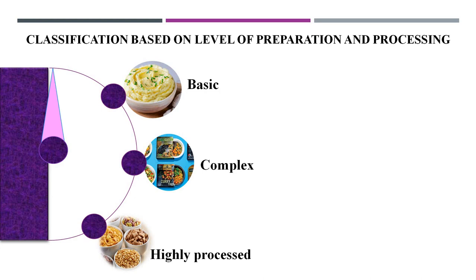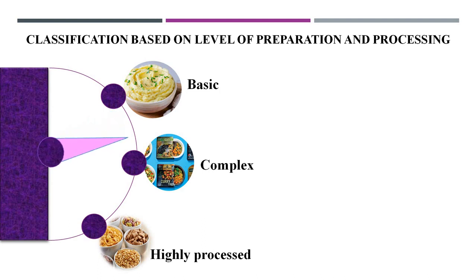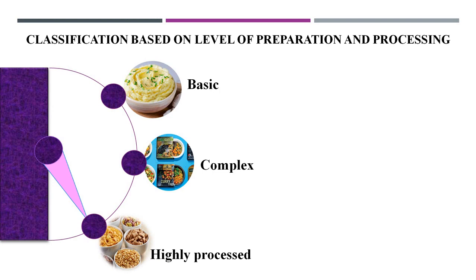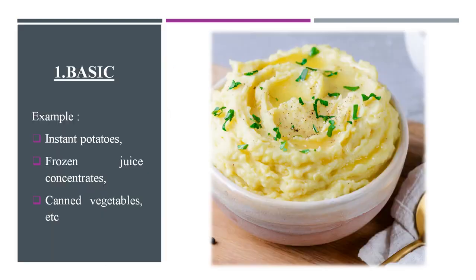Classification based on level of preparation and processing. Under this, there are three types: basic foods, complex foods, and highly processed foods. Basic foods are dried, frozen, or canned foods with one or very few ingredients.